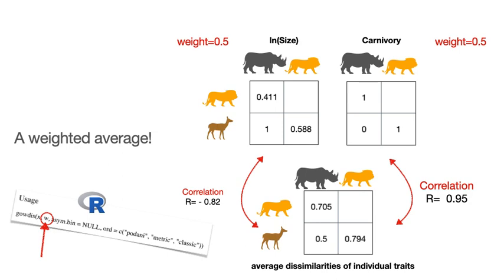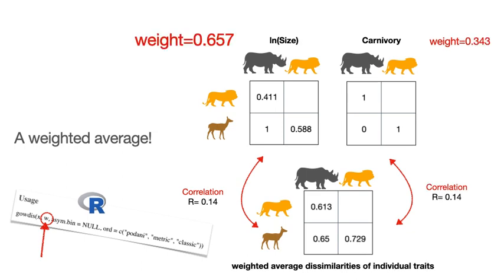In this example, we can see that both traits have the same weight (w = 0.5), which means we are doing a simple average. But this creates an unbalanced contribution between traits. In reality, the Gower distance can allow computing a weighted average of single-trait dissimilarities, not just a simple average. In the function Gaudis, this is done by changing the argument w. We can increase the weight of traits which had lower contribution, as in the case of size, and by doing this we can equalize contributions across traits. In this specific case, we can use double weight for size compared to diet so that both traits will have the same contribution.